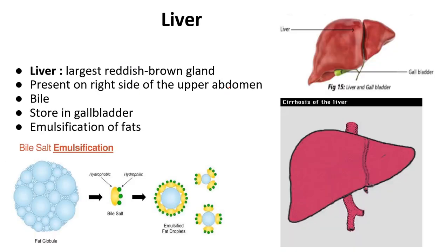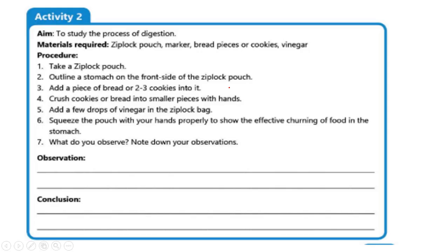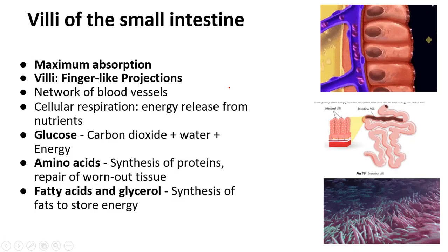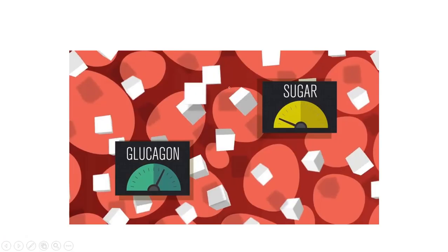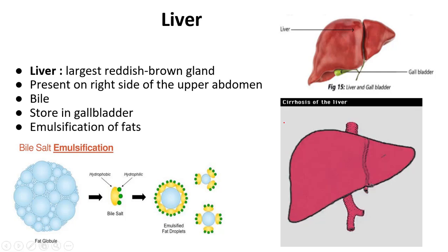Which accessory glands are important for the small intestine? They are: liver, pancreas, and gallbladder. Liver and gallbladder work together, and then you have the second part, that is pancreas.